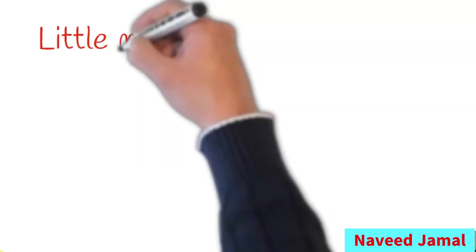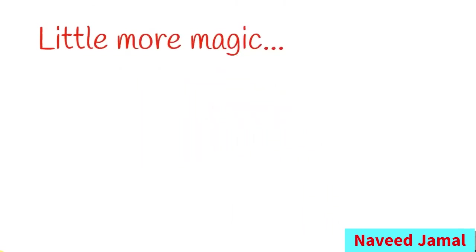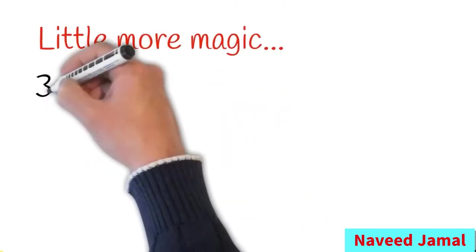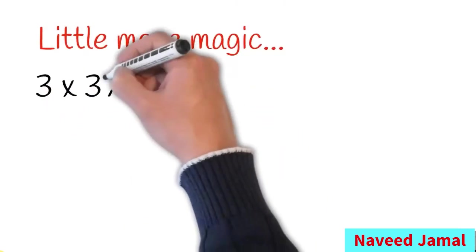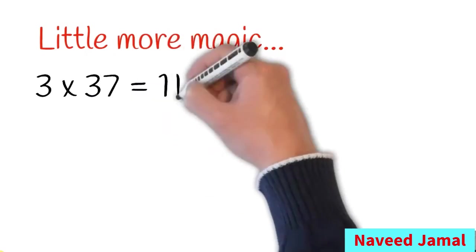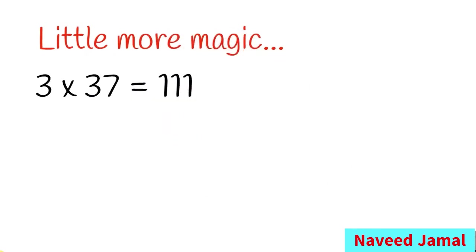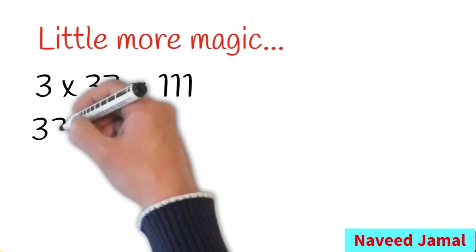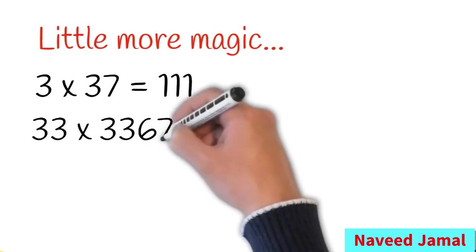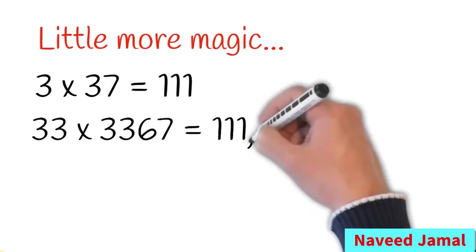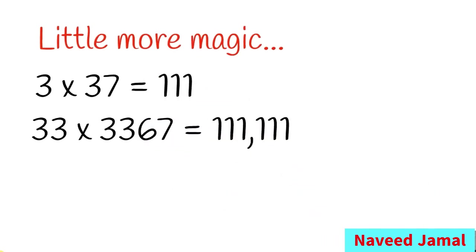Now, next, a little more magic. Three times 37 is equal to 111. Same — 33 multiplied by 367.